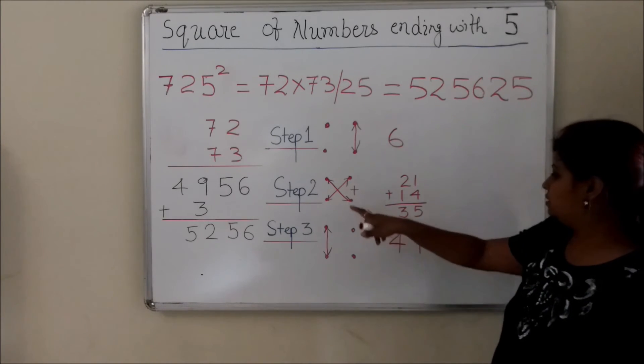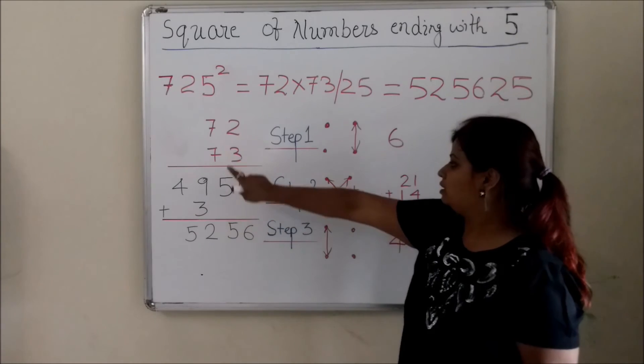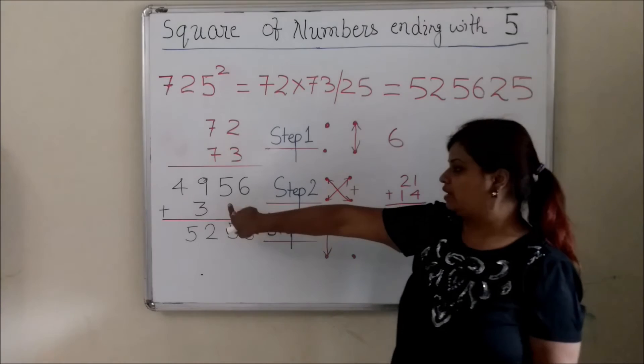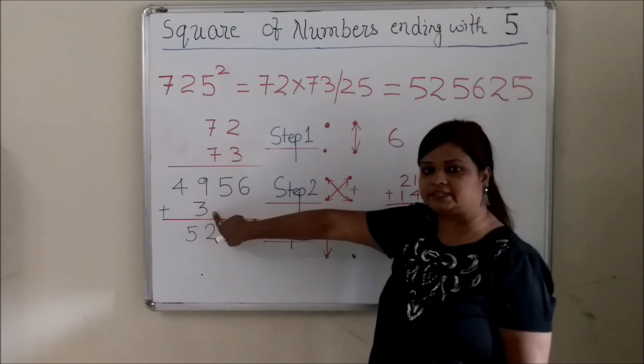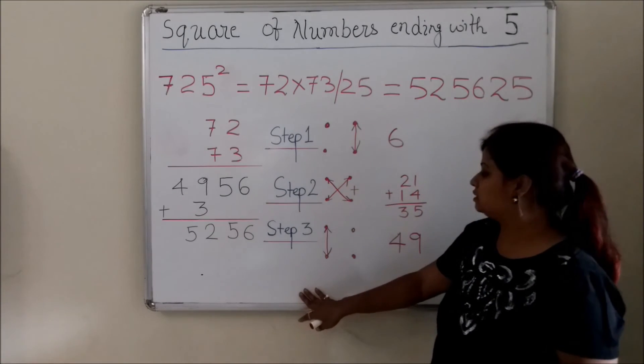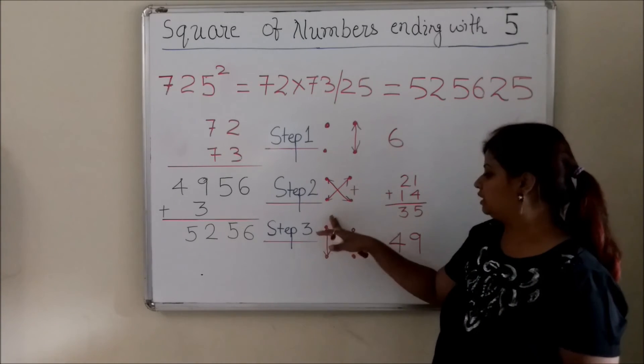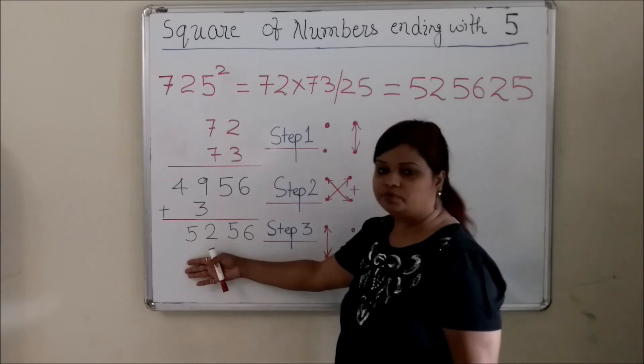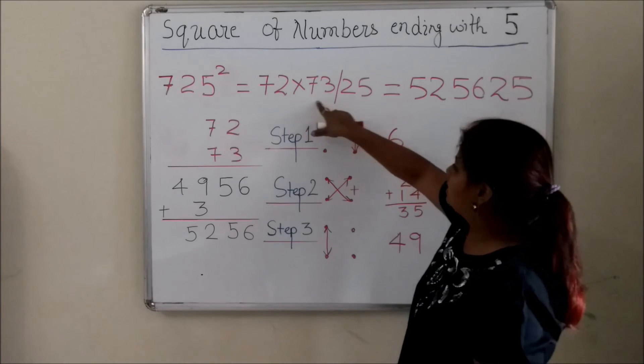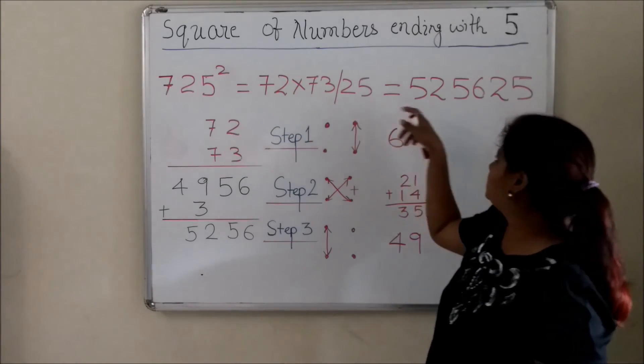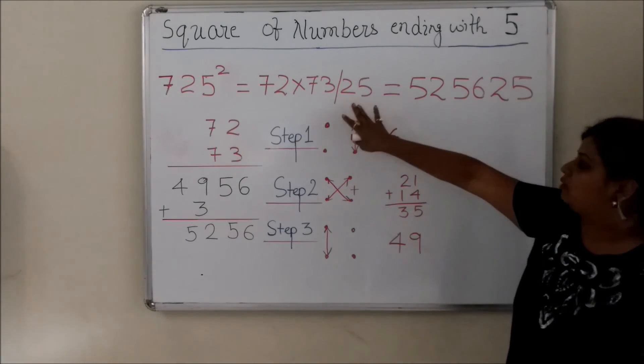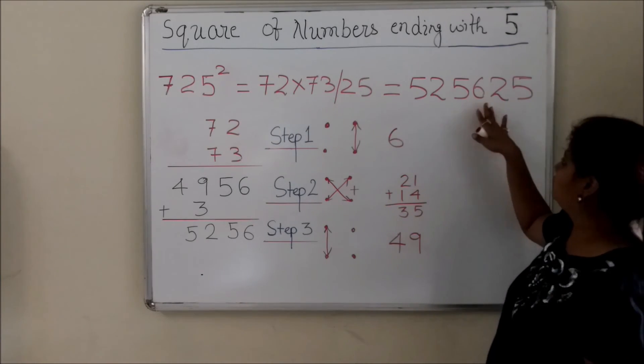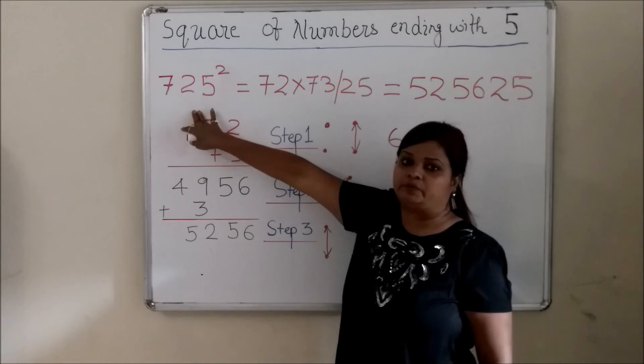Now how do I add this? So first you have already got 6 here. You multiplied this second step, you got 35. So 5 you are keeping it here and 3 you are carrying over to the next place value. And what is the last step? Last step is the multiplication of the 10th digit which is 7 times 7 is 49. Now when you add this you get 5256. So answer of 72 into 73 is 5256. And already we have got this one part. So this is the answer. 525625 is the square of 725.